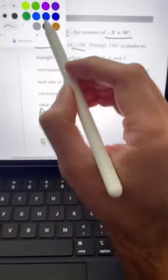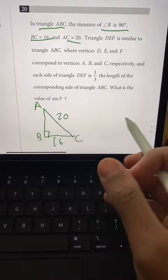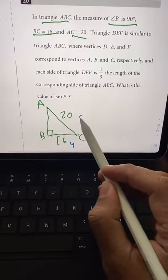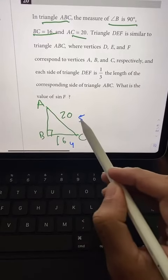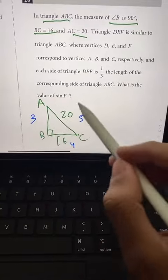Now, automatically, on the ACT and SAT math sections, anytime I've got a right triangle, what wants to pop to my head is 3, 4, 5. And you'll notice here that this is the 4, this is the 5, because 4 times 4 is 16 and 5 times 4 is 20. So this is going to be the 3 in terms of the relative proportions.